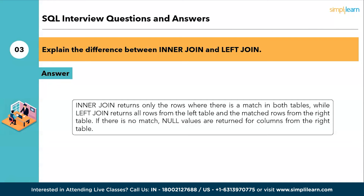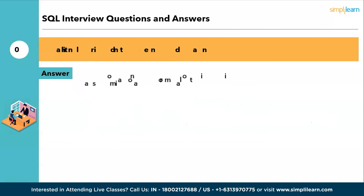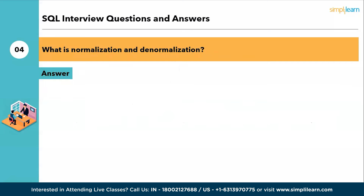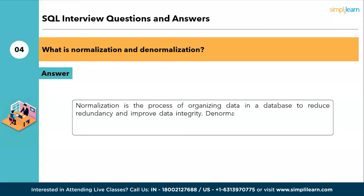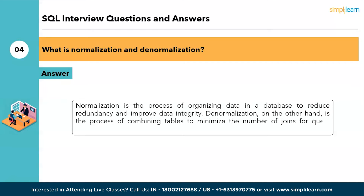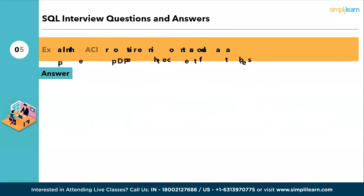The fourth question: what is normalization and denormalization? Normalization is the process of organizing data in a database to reduce redundancy and improve data integrity. Denormalization, on the other hand, is the process of combining tables to minimize the number of joins for query optimization.